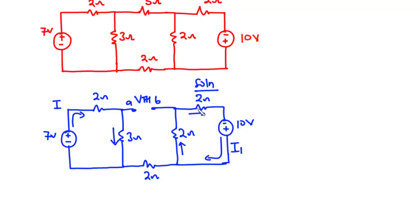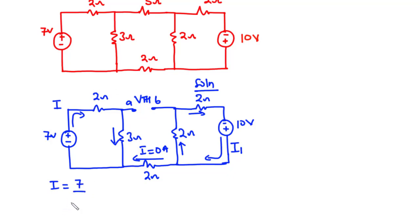The current produced by the 10 volts will flow through this 2 ohms resistor, through this 2 ohms resistor, and then finally return to the negative terminal of the voltage source. The same happens with the 7 volts, so we have no current flowing through this resistor — the current here is 0 amperes. For I, we have I equal to 7 divided by 2 plus 3. So 7 divided by 5 is equal to 1.4, therefore I equals 1.4 amperes.